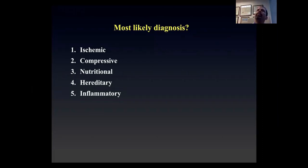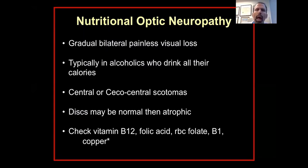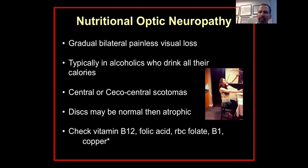Nutritional optic neuropathy is usually gradual, bilateral, painless vision loss — often in alcoholics in the US who drink all their calories. When you ask about drinking and they say one glass a day, ask how big the glass is. Patients often have central or cecocentral scotomas. Their disc may be normal, but ultimately discs become atrophic and the damage is permanent. We check vitamin B12, folic acid, serum folate, red blood cell folate, and thiamine (B1). Red blood cell folate is like a hemoglobin A1C — it reflects chronic levels rather than a single-day measure. In a paper we wrote on folate deficiency optic neuropathy reporting six patients, three had low serum and red blood cell folate, and the other three had normal serum folate but low red blood cell folate — all improved with folate supplementation.